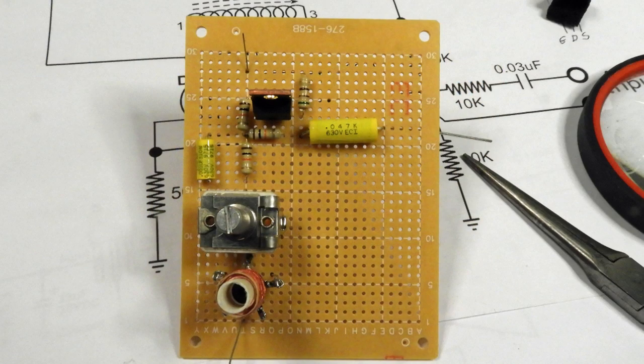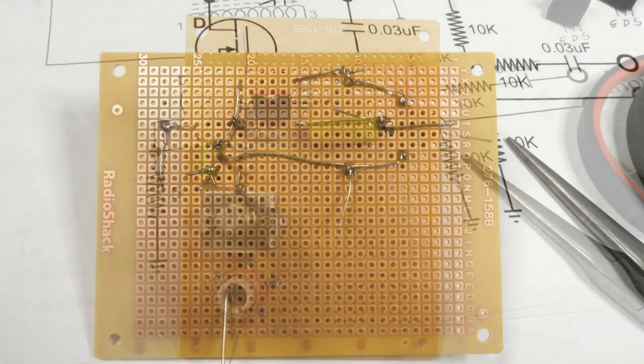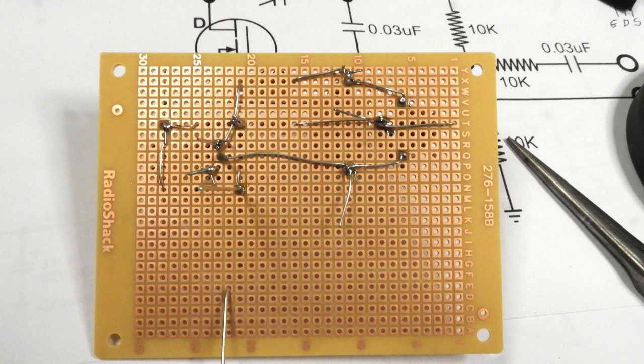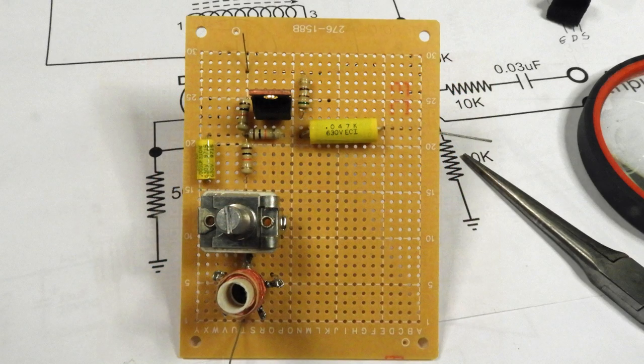Here I've completed the building of the transmitter. And here's the underside of what it looks like. And you can see that it's just point to point wiring. And now it's time to test the transmitter before I do anything else.